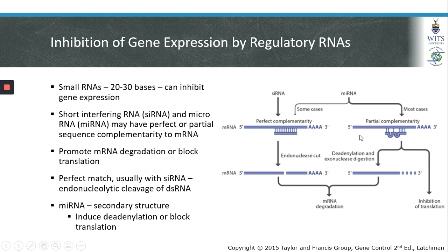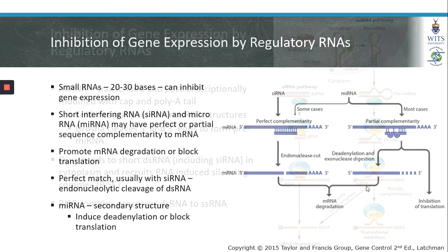If a microRNA has partial complementarity to an mRNA, it can inhibit the translation of that mRNA by preventing the ribosome from binding and translating that mRNA into a protein. We will now look at the enzymes that are involved in this process.